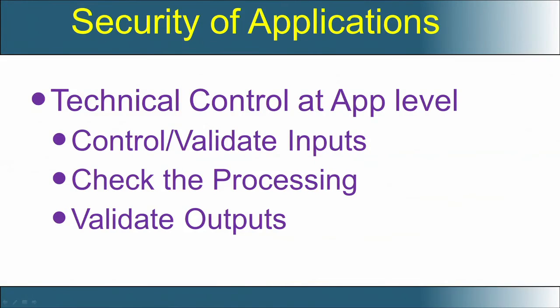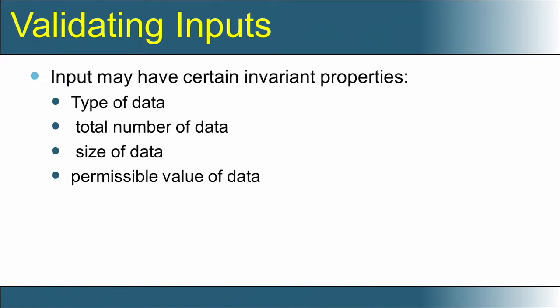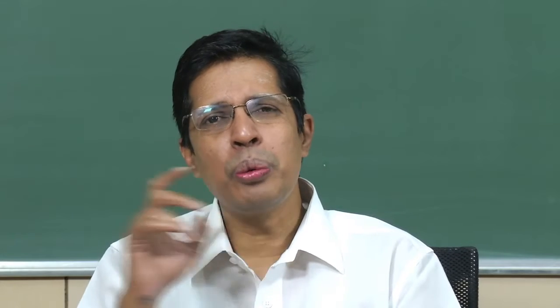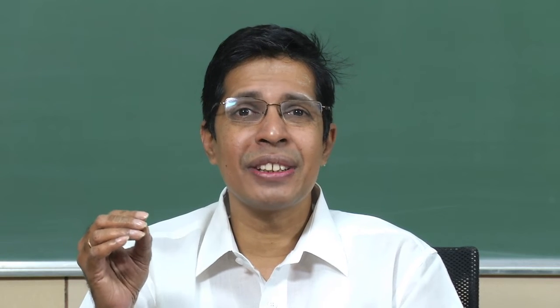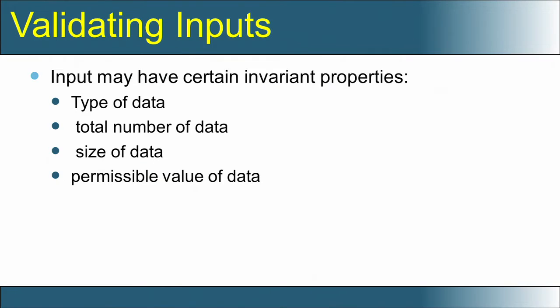Let us see what we mean by controlling the input, controlling the processing, and controlling the output. When looking at validating inputs, the control you could have on an input is basically to check whether the input is proper. Input can have certain invariant properties, and we can go and check whether those invariant properties are satisfied.